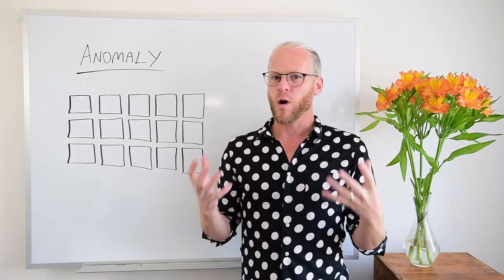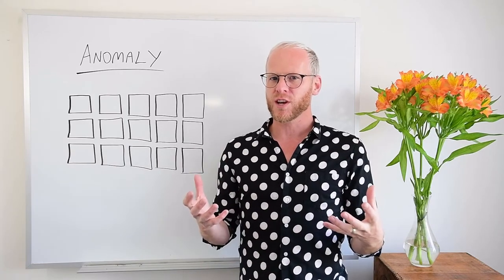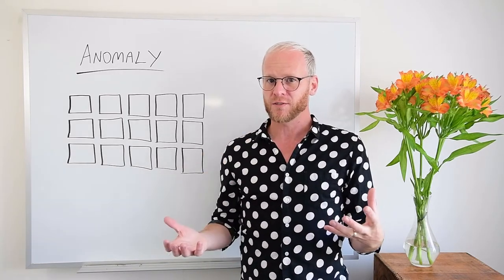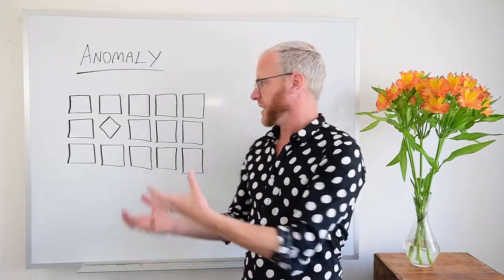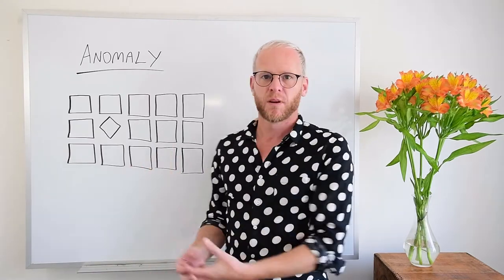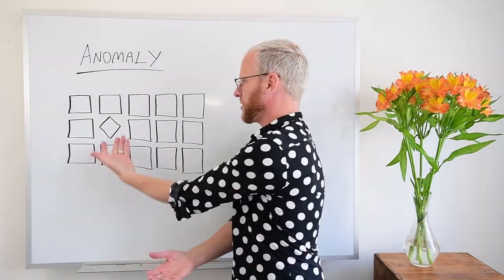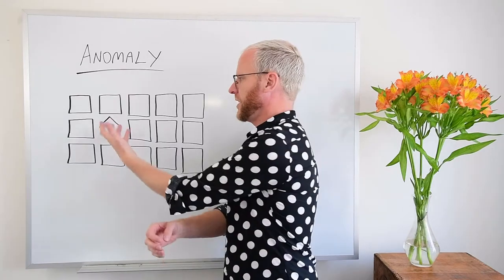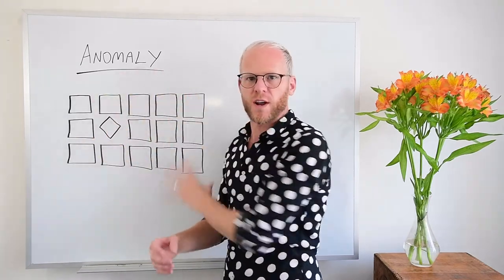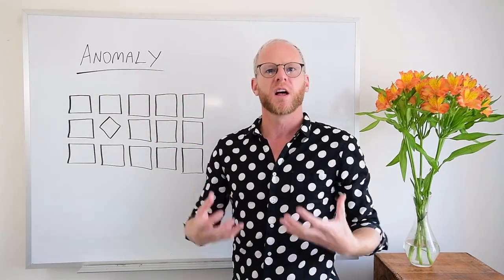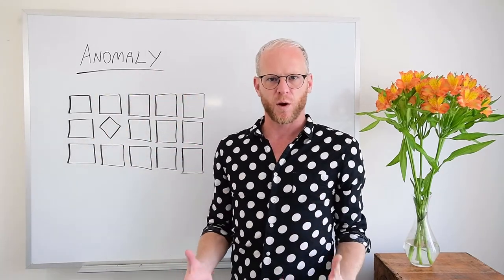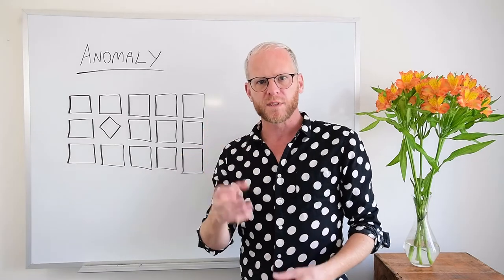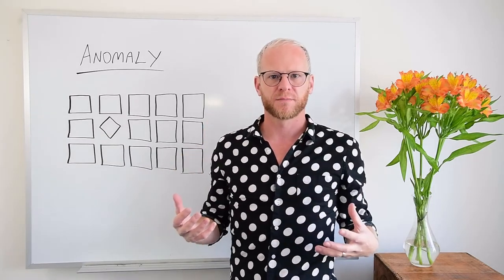But if we make one small change — rotate one of the squares by 45 degrees, creating a diamond shape — what do you look at now? Well, it's obvious. It's that one. This is anomalous to the rest of it. That's what the design principle of anomaly is all about: making one element stand out from the rest.